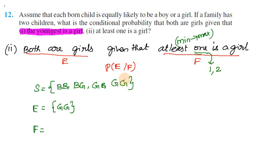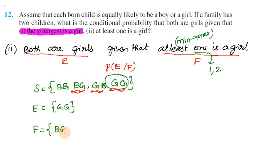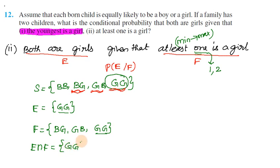F includes: boy-girl, girl-boy, girl-girl — outcomes with at least one girl. The common event E intersection F is girl-girl. P(F) is 3 outcomes out of total 4, so P(F) = 3/4. P(E intersection F) = 1/4.